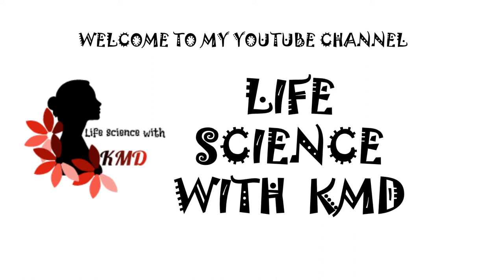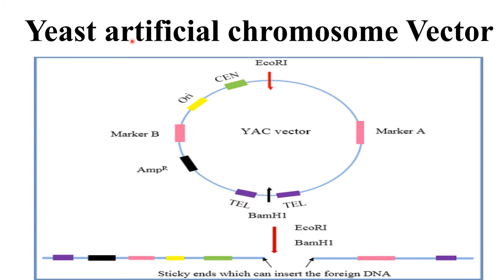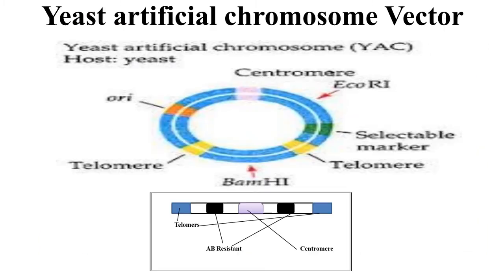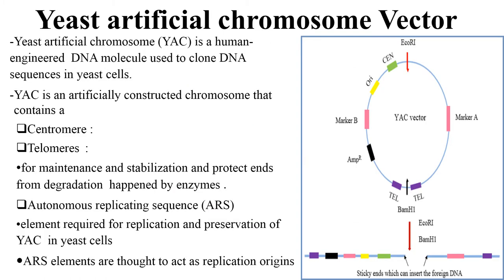Hello everyone, welcome to my YouTube channel Life Science with KMD. Today I'm going to explain about Yeast Artificial Chromosome vector, also called a YAC vector. The host of this vector is yeast. It consists of a centromere site, telomere sites, along with the origin of replication site, a selectable marker, and multiple cloning site. YAC is a human-engineered DNA molecule used to clone DNA sequences in yeast cells.